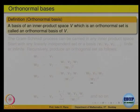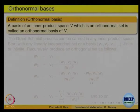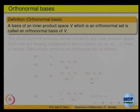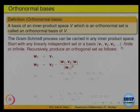Now, recalling what we did in finite dimensional vector spaces: given a basis, you can make an orthonormal basis out of it. What was the process? That was basically using what is called the Gram-Schmidt process. At every stage, remove the projection onto the previously defined vectors. So given vectors — any finite number of vectors — this set may be finite or infinite, but look at V1.